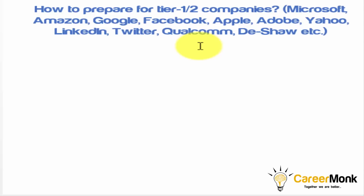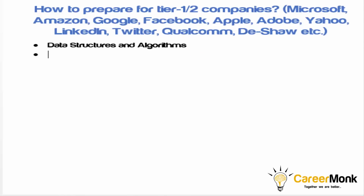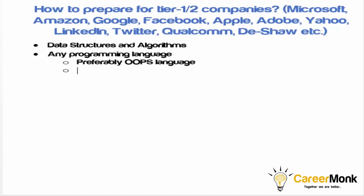Let us start by listing down the concepts we need to prepare for tier 1 and tier 2 companies. First, we need to prepare data structures and algorithms. We also need to be proficient in any programming language — preferably an OOP language like Java, Python, or C++. Having OOP knowledge gives a broader view while solving problems.